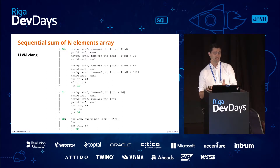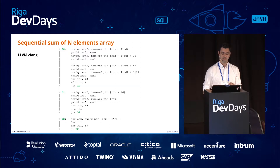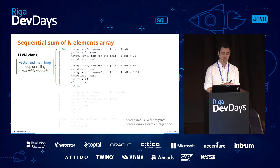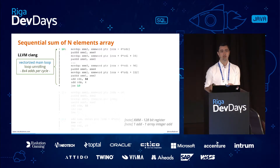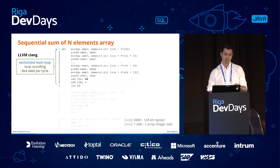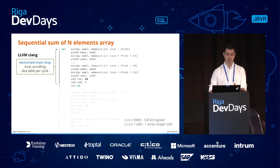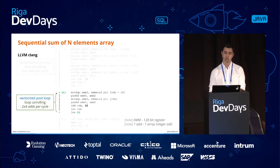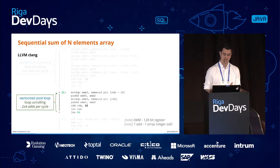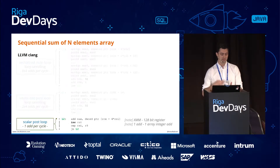LLVM Clang does essentially the same idea, but there is an important difference: for the main loop, it uses vectorized operations with XMM registers. One XMM register contains 128 bits and can fit four integers. The main loop is still unrolled, but it tackles 32 integers per loop cycle because there are eight additions and each XMM register covers four integers — 8 × 4 = 32 per cycle. If there is a remainder less than 32 but greater than 8, there is still a vectorized post-loop covering 8 integers per cycle, and the last remaining elements are added one by one.